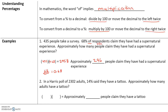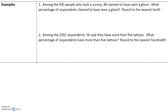So when we want a percentage of something, we multiply the percent in decimal form times the total. For the second example, please try by yourself and we will go over it in class. Among 435 people who took a survey, 48 claim that they have seen a ghost. We want to find out what percent of respondents claim to have seen a ghost.